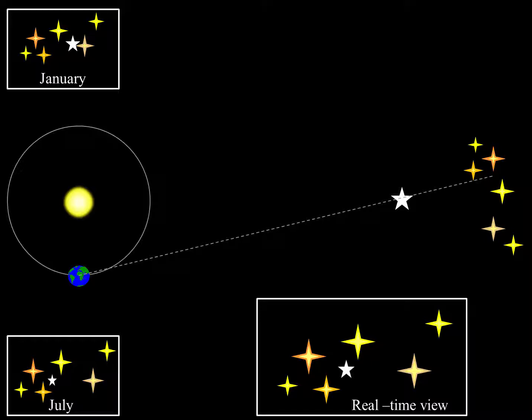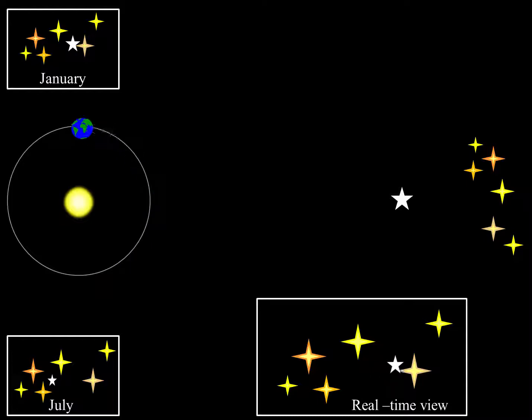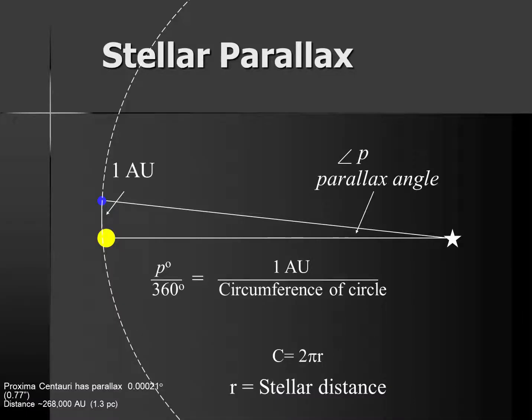How do we know it's the Earth that moved and not the star? Six-month parallax is going to require a whole year. We need to wait until the Earth returns to the spot in January to confirm that the star returns to its original position. If it does, then we know that that motion was apparent motion due to the Earth's orbit around the sun. Once we measure that angle, we can do a little math to determine the distance to the star.